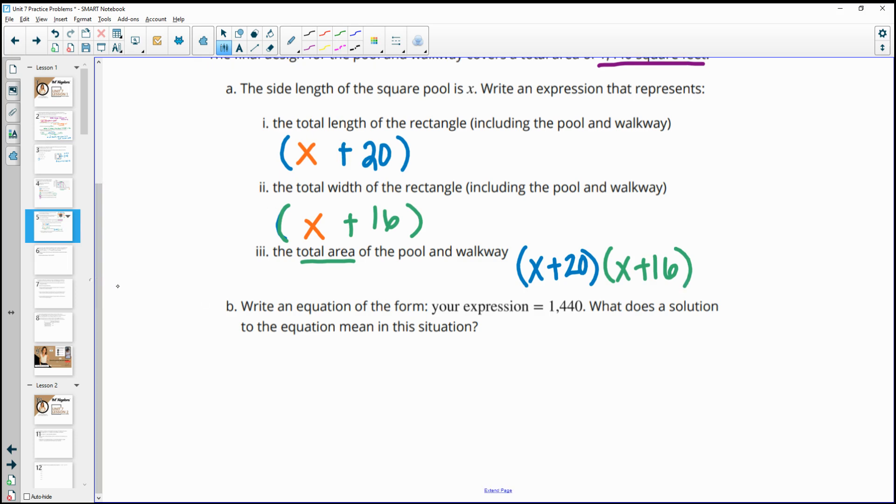Then it wants us to write an equation of the form that says your expression equals 1440. So you're going to take this expression that you created here, and then you're just going to set that equal to 1440. Then it says, what does a solution to the equation mean in this situation? So your solution would be finding X, right? So your X's would be your solution. And those represent the length and width of the pool. So the solutions are going to be the length slash width of just the pool.